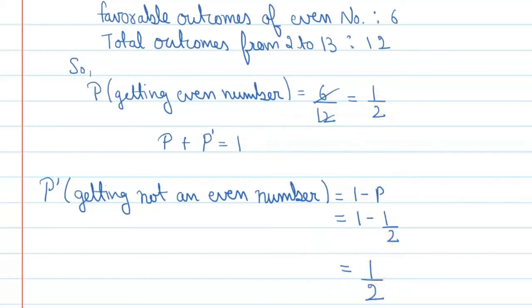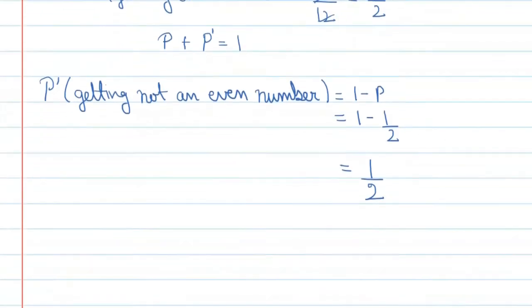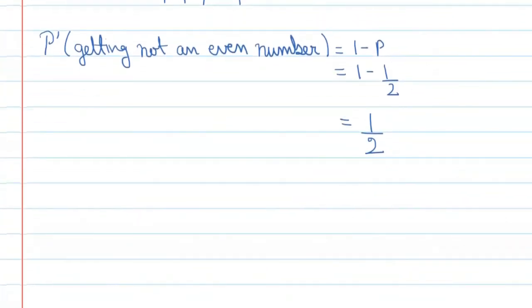So therefore we can say that the probability of not getting an even number will also be 1 upon 2. Let me write it down.